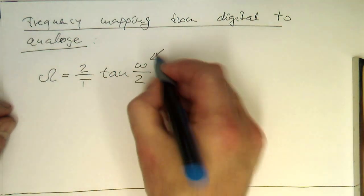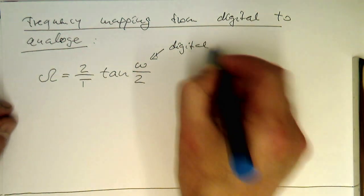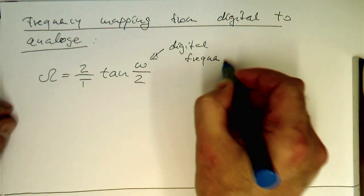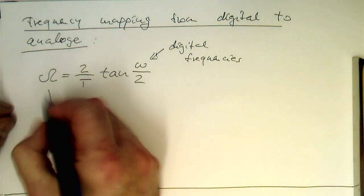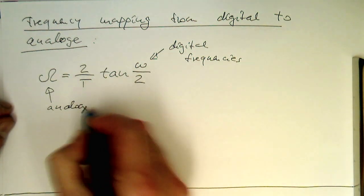This is omega equals 2 divided by t then tangent omega divided by 2. So these are our digital frequencies here, and these are our analog frequencies.